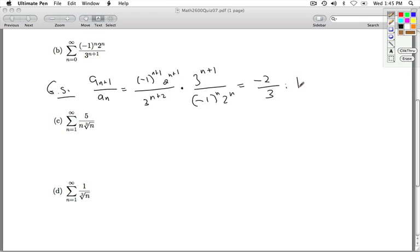So it is a geometric series. If I take the absolute value of the ratio, it's 2 thirds. That's less than 1. So this converges by the geometric series test.